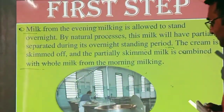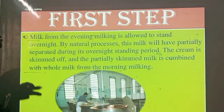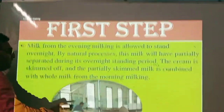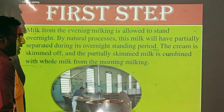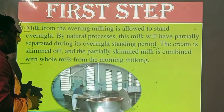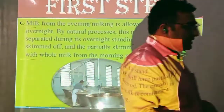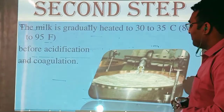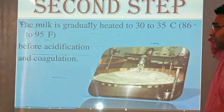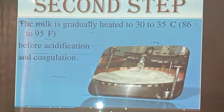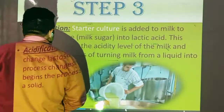Now let's discuss each process in detail. The milk from the evening milking is allowed to stand overnight; by natural process the milk partially separates. The cream is skimmed off and the partially skimmed milk is combined with the whole milk from the morning milking. The first step is mixing of the milk. The second step is pasteurization — milk is gradually heated to 30 to 35 degrees Celsius before acidification and coagulation.